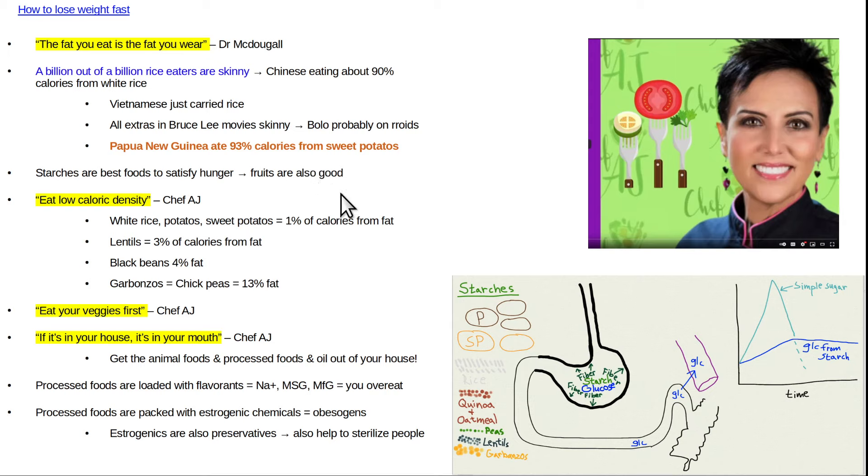Starches are the best foods to satisfy hunger. Fruits are also good, but starches are the best. Starches are basically a polymer of glucose, a long chain molecule of glucose wrapped in fiber. So it takes time. First of all, the low caloric density of a starch stretches the stomach, and that provides early satisfaction to hunger, early satiety. Then the starch goes into the intestinal tract, and it takes time for the digestive enzymes to peel the fiber away from the glucose, and then the glucose is absorbed into the blood. So you get a relatively not that much of a spike in the blood glucose, and you basically, with the starch, satisfy your hunger with the fewest number of calories for the most prolonged amount of time.